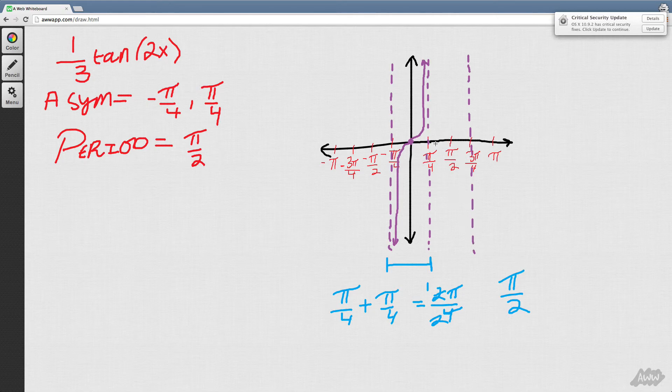Alright. In between those points, we'll get our x intercept will be pi over 2. And we're going to draw our graph again.